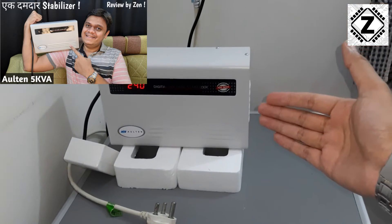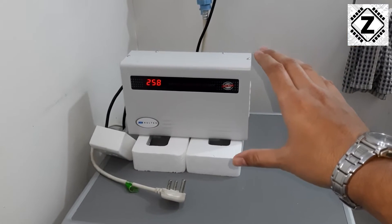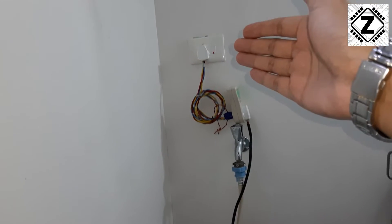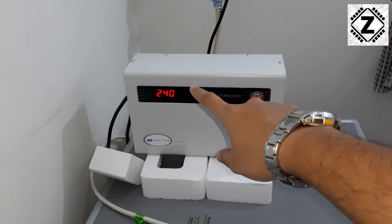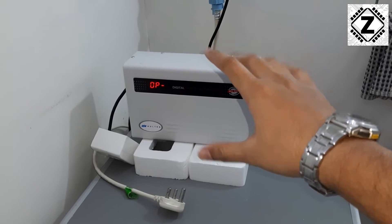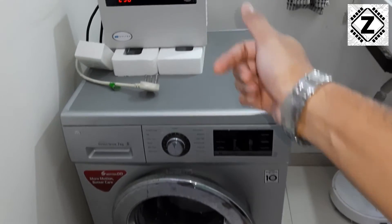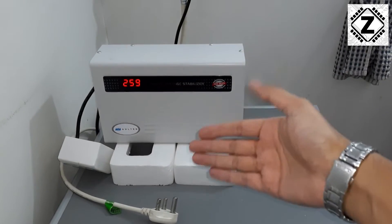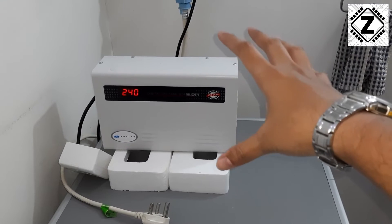This stabilizer is nothing but a machine which converts the input voltage, which is pretty high at this moment. It is taking the input from the wall socket which is 258 volts, pretty high voltage, and converting it into somewhat safer 240 volts. I use that output of 240 volts to run and safeguard my washing machine as you can see over here.